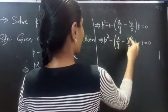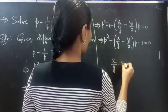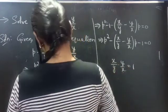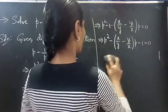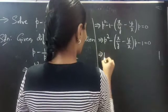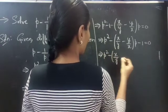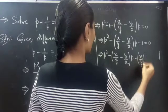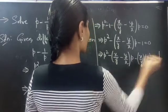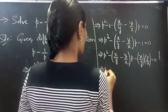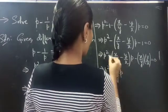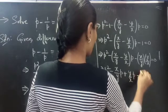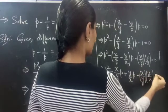Now, the product of x/y and y/x equals 1, so we replace the 1 with x/y times y/x. This gives us P squared minus (x/y minus y/x) times P minus x/y times y/x equals to 0. Expanding: P squared minus (x/y)P minus (y/x)P minus (x/y)(y/x) equals to 0.